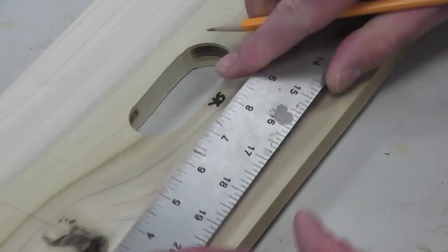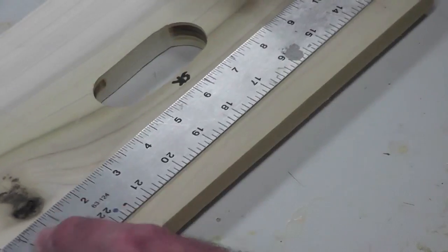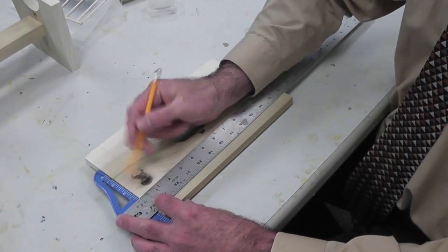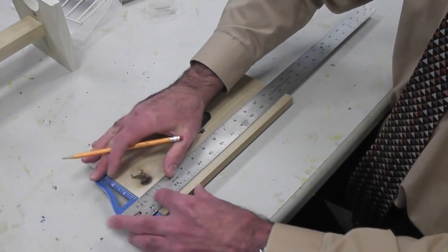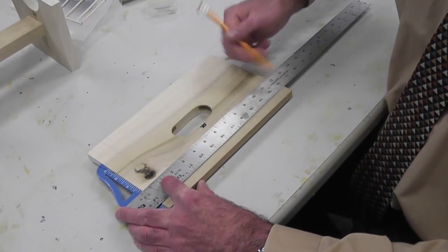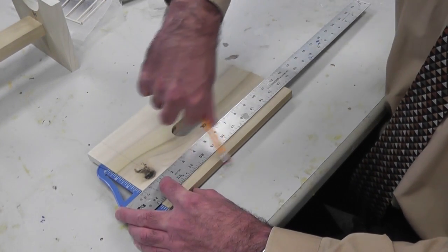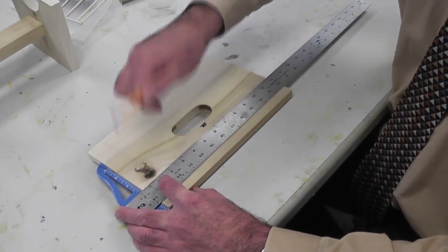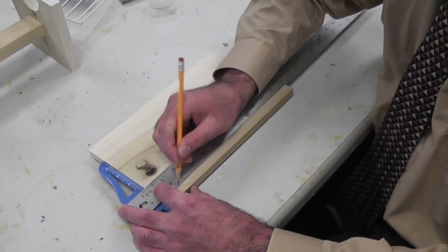Now I'm going to take my T-square. We want this to be tight so that it's making a straight line that's perpendicular or parallel. Parallel to this edge, perpendicular to that edge. And I'm going to make a little line.